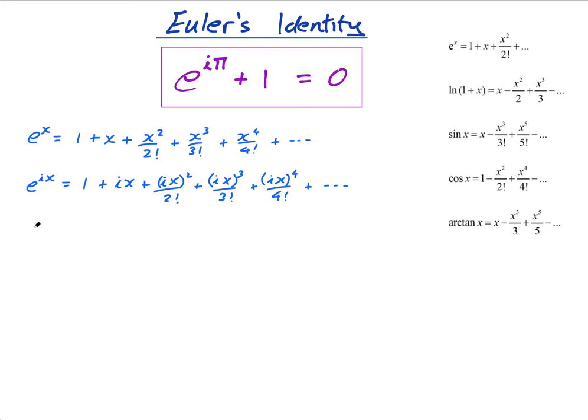Now, what happens here is I get this equals 1 plus i times x. Now, what happens here is i squared becomes i squared is negative 1. So, this actually becomes minus x squared over 2 factorial. And then this, i cubed, is actually minus i. So, this becomes minus i x cubed over 3 factorial. And then this, i to the power of 4, is actually going to be plus. And i to the power of 4 is just going to be plus 1. Because it's minus 1 times minus 1, which is plus 1. So, it's plus x to the 4 over 4 factorial. And then I'll keep going. I'll do a few more.